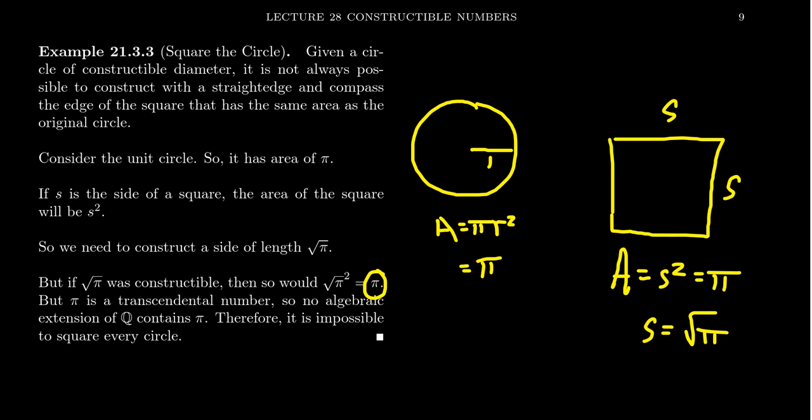But π is a transcendental number, and therefore no algebraic extension of ℚ contains π. The field of constructible numbers is in fact an infinite algebraic extension of the rational numbers, and therefore contains no transcendental numbers.